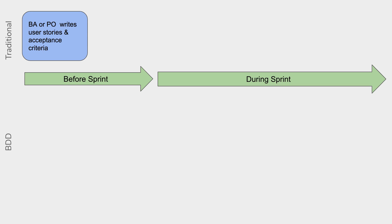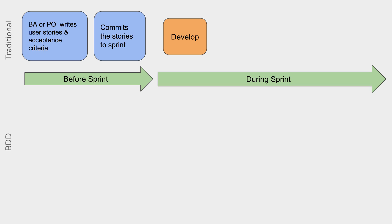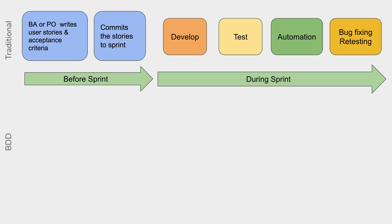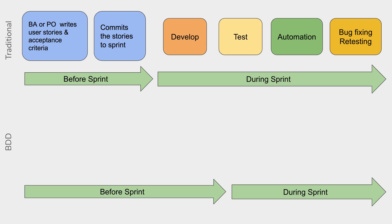In a traditional process, it starts when a business analyst or product owner gets the requirements, then writes user stories and the acceptance criteria, and commits the user stories to the Sprint. The Sprint starts, the development team starts creating the code, the testing team starts creating test cases, then there is the automation and test execution phase where tests are executed and automated. Finally, if there are bugs, they are fixed and retesting is done.